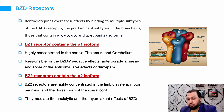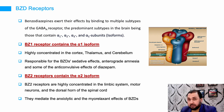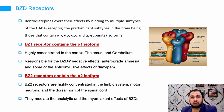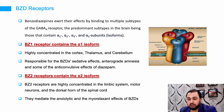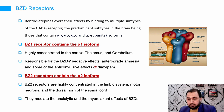Coming to the benzodiazepine receptor — if you study the GABA-A receptors, there are multiple isoforms based on different alpha subunits. Benzodiazepines mostly work on the alpha-1 and alpha-2 isoforms. They exert their effects by binding to multiple subtypes of GABA-A receptors, with the predominant subtypes in the brain being those containing alpha-1, alpha-2, alpha-3, and alpha-5 subunits. The alpha-1 receptors are located in the cortex, thalamus, and cerebellum, and are responsible for sedative, anti-amnesic, and some anticonvulsive effects.